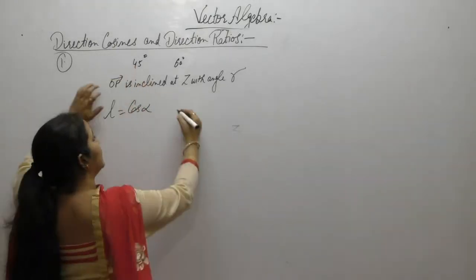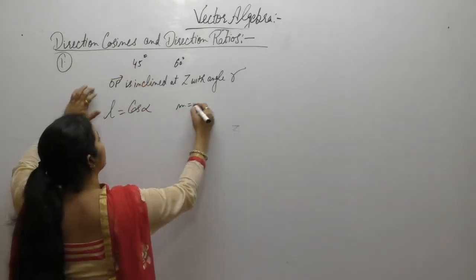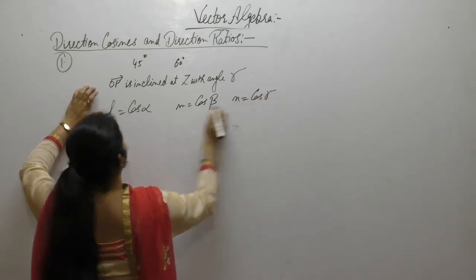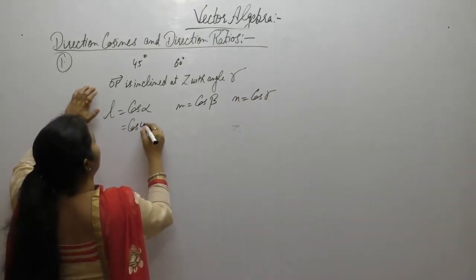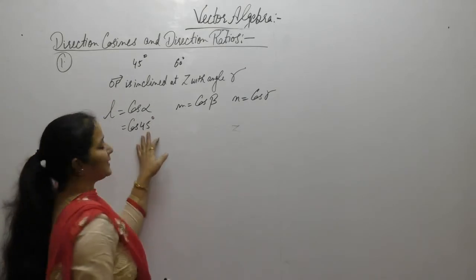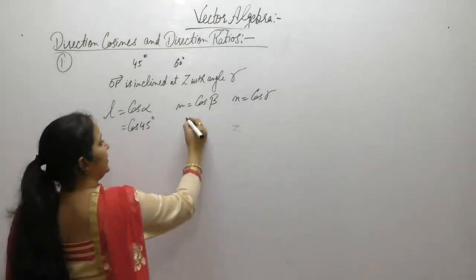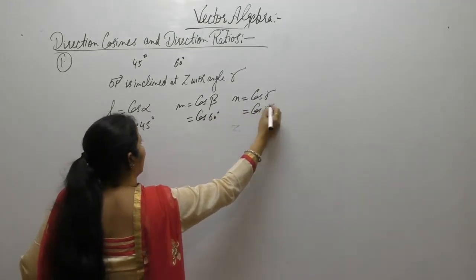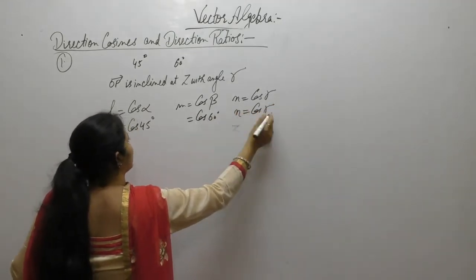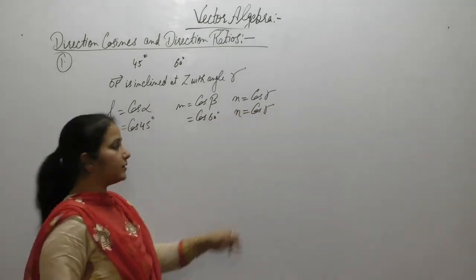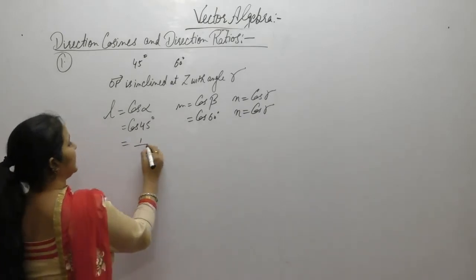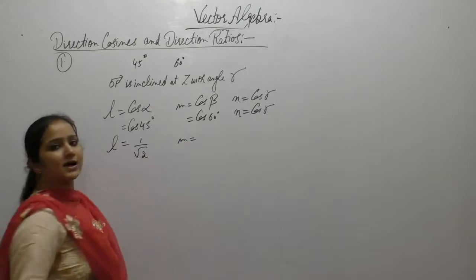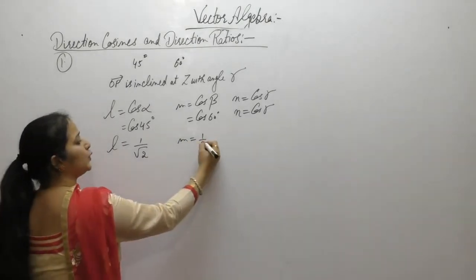If we have given the angles, l = cos(alpha), m = cos(beta) and n = cos(gamma). It is given that on the x-axis it is inclined with angle of 45°, at the y-axis angle of 60°, and at the z-axis we want to find that angle. cos(45°) has value 1/√2 and cos(60°) is 1/2.